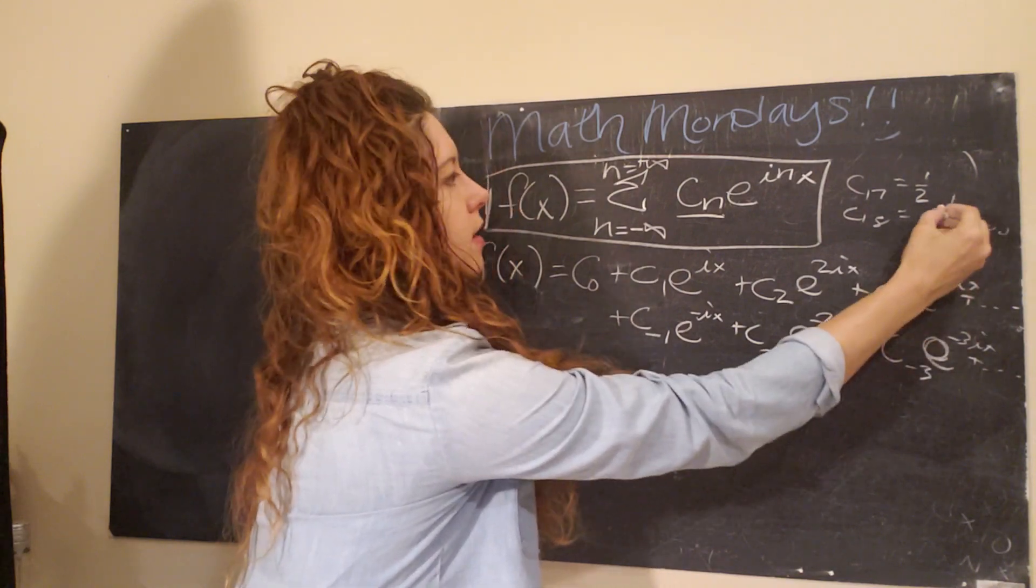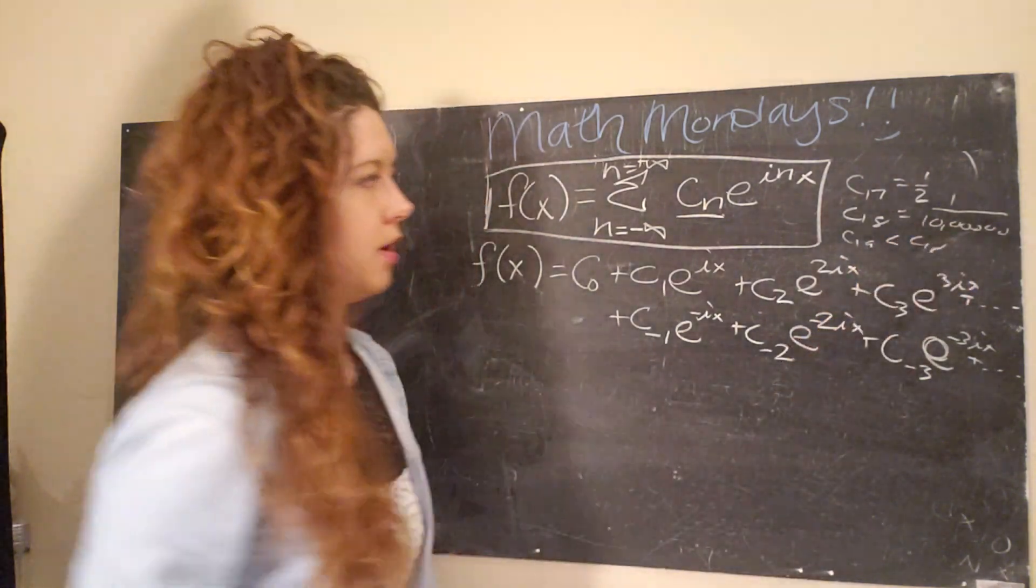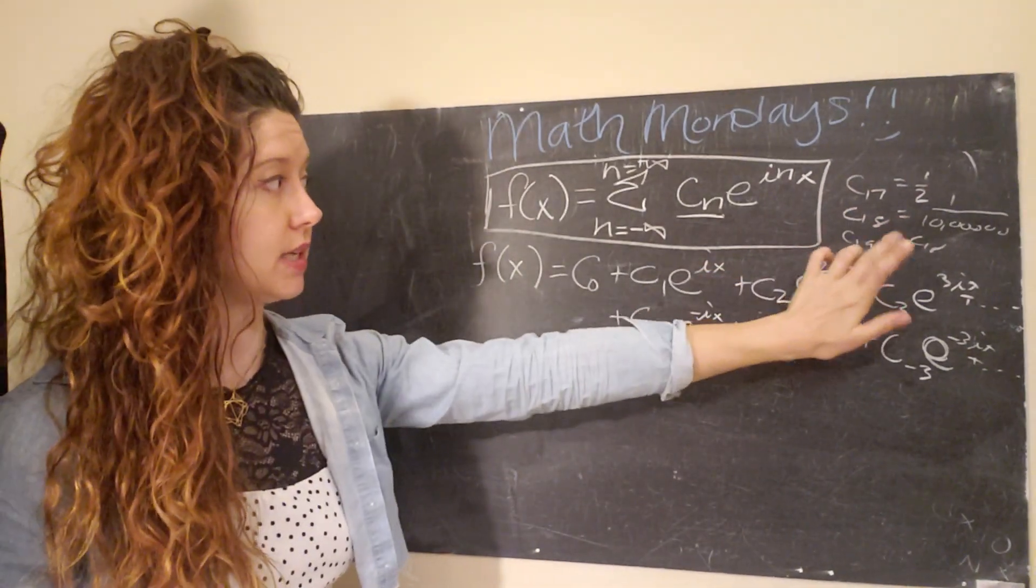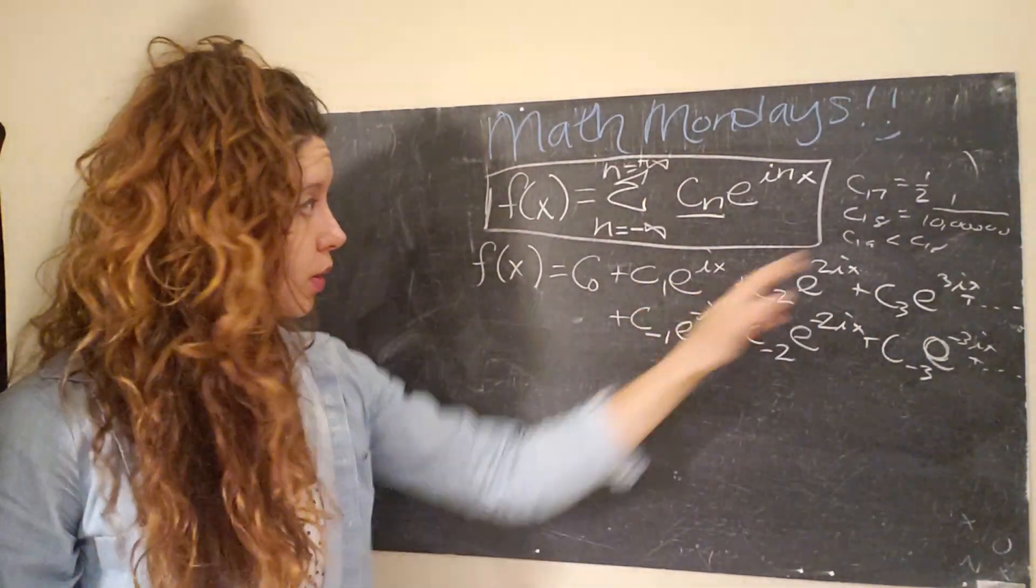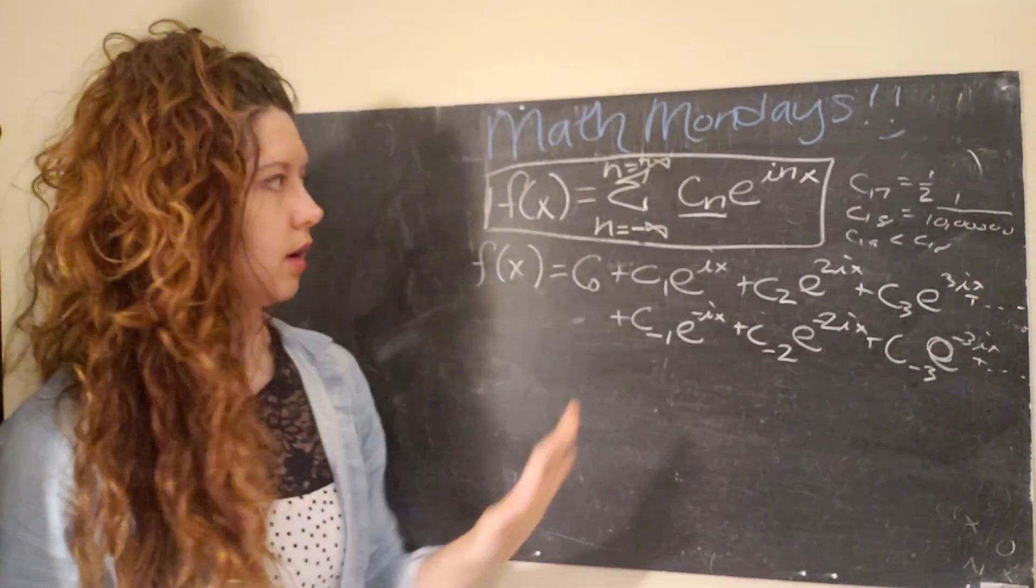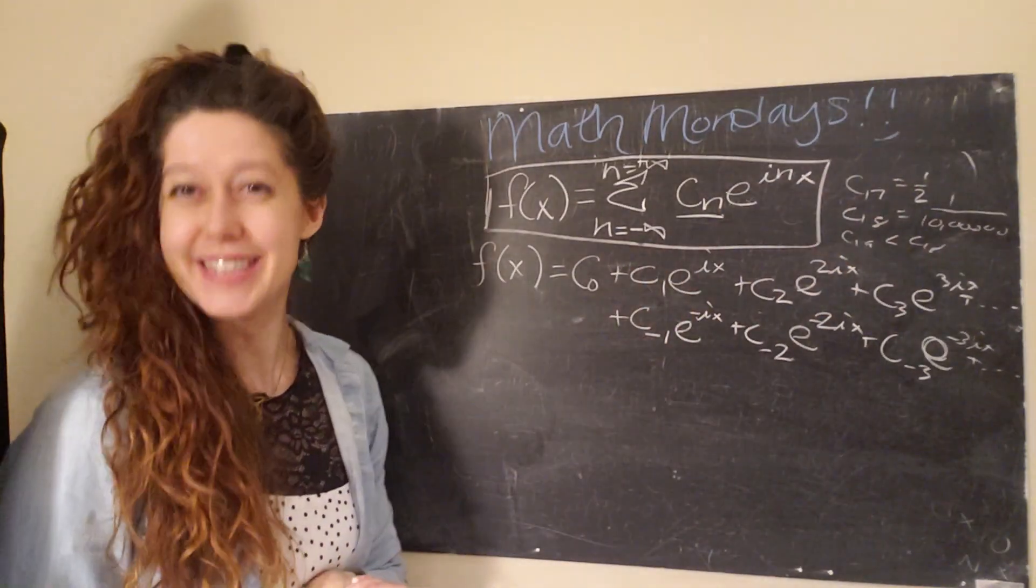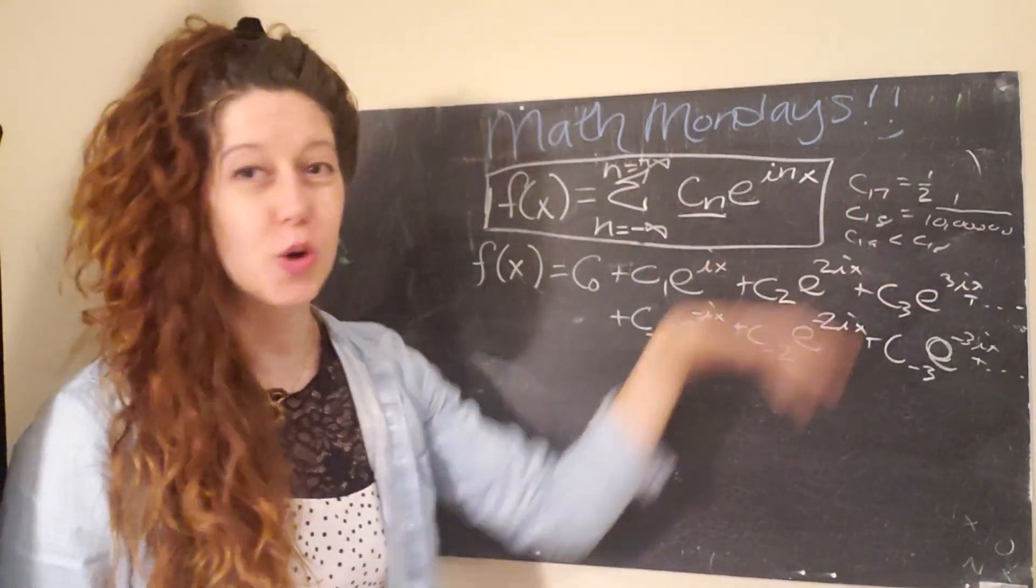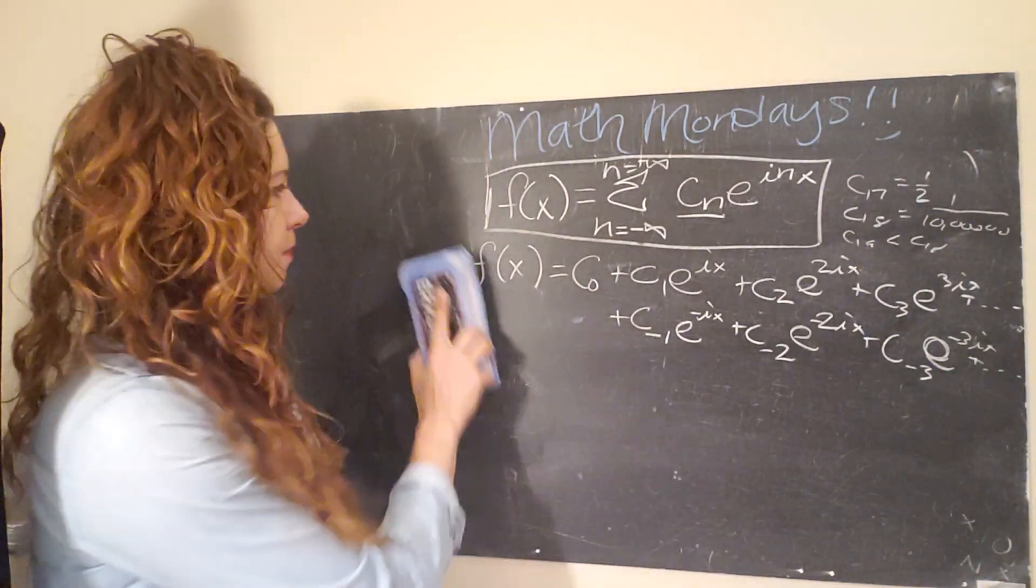It's a very small number. And then c19 was less than c18. We could say, okay, well, c17 is much, much, much larger than c18, 19, and all of the rest of the coefficients. So therefore, we can stop our Fourier series after n equals 17. And you would do the same for the negative numbers. And so basically, this allows us to save some time and space by basically figuring out which terms we can ignore because they don't really contribute to our series that much. Okay.